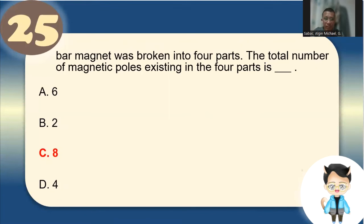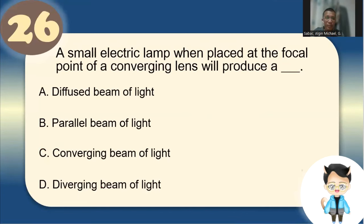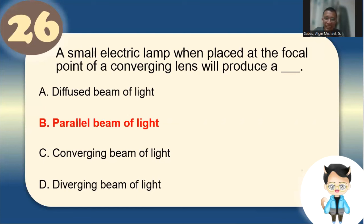Number 26: A small electric lamp placed at the focal point of a converging lens will produce a parallel beam. Key term: focal point → parallel beam.